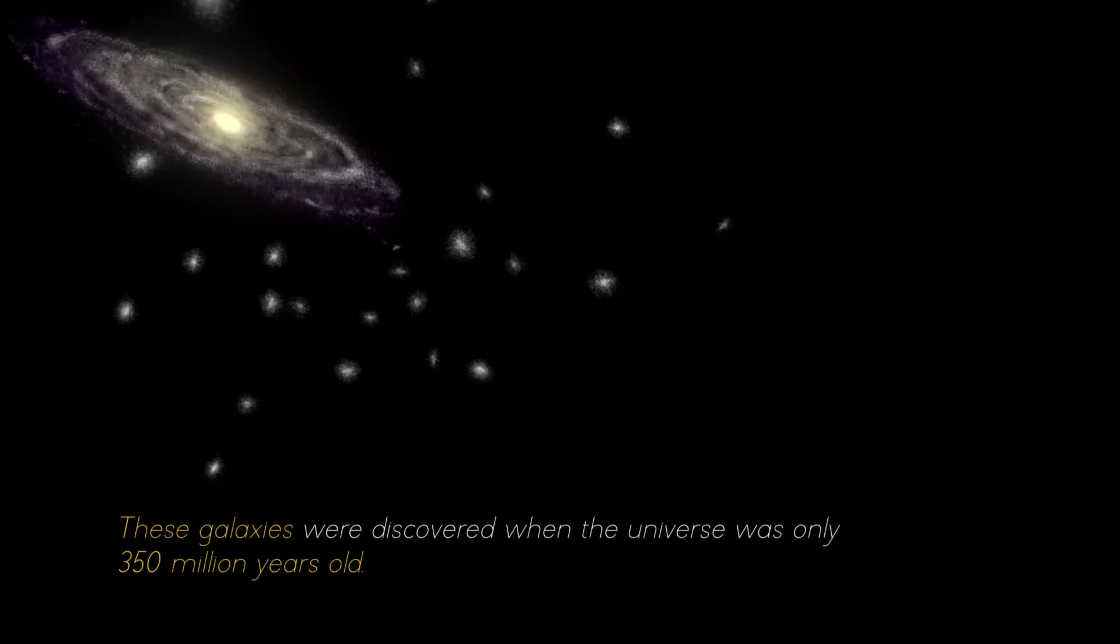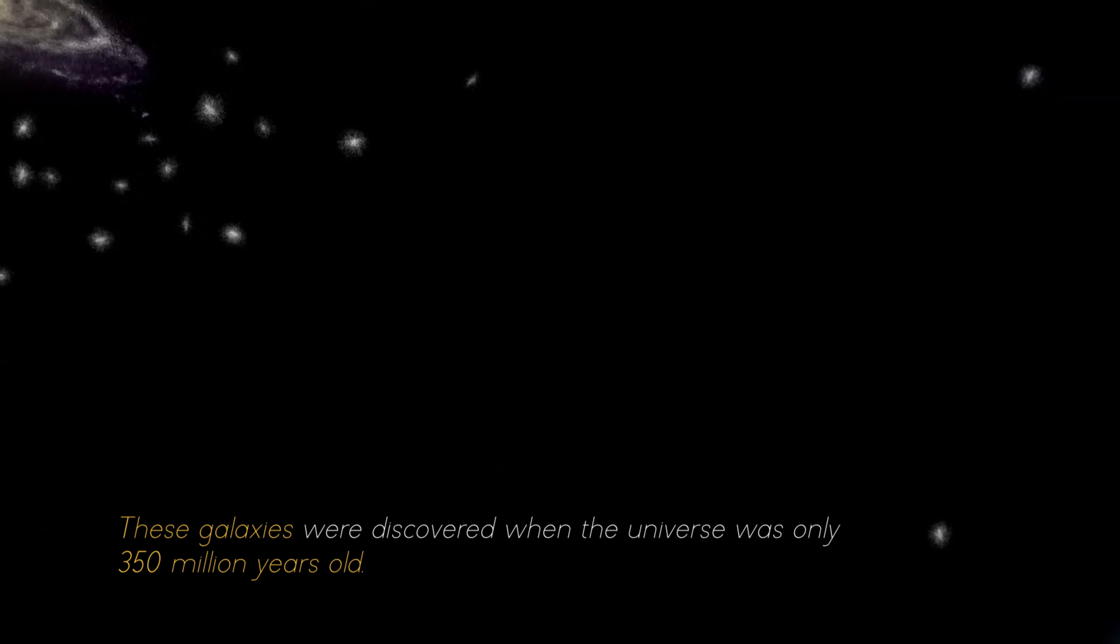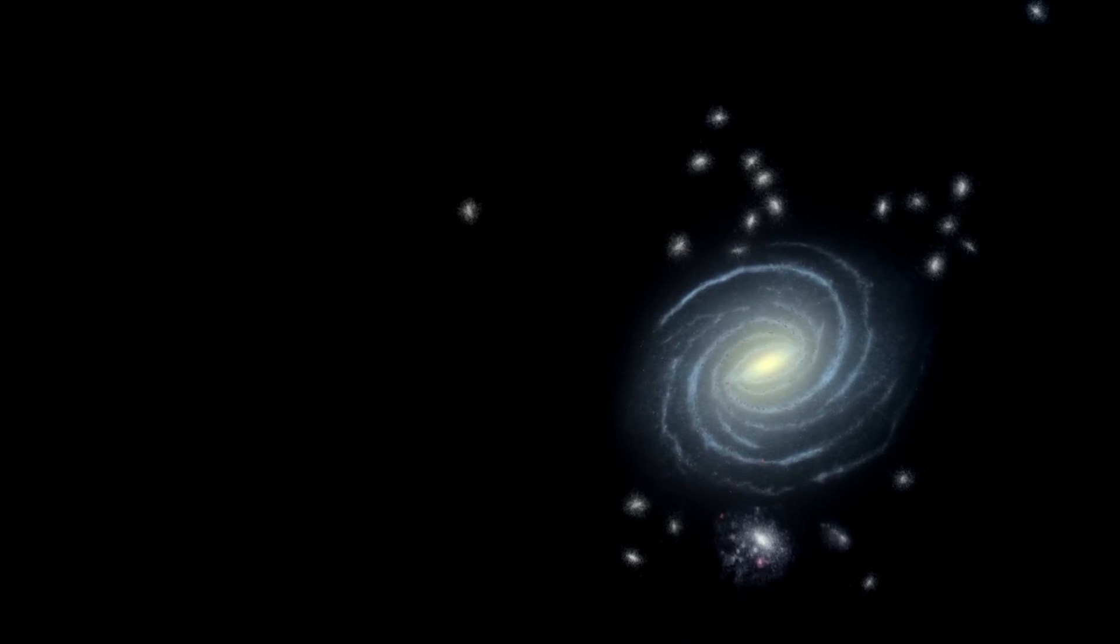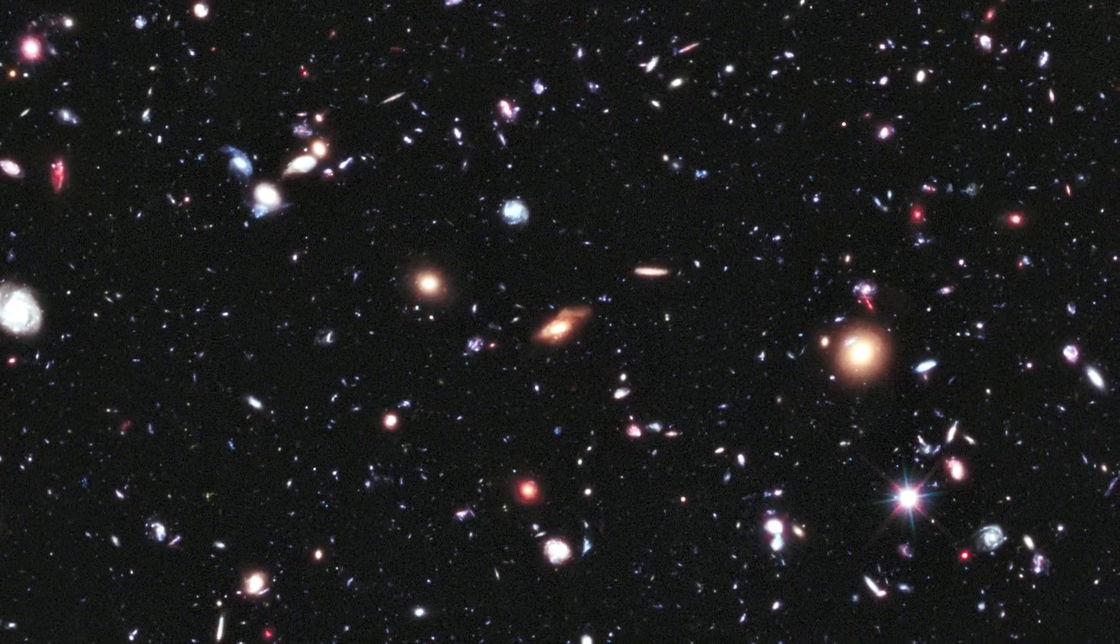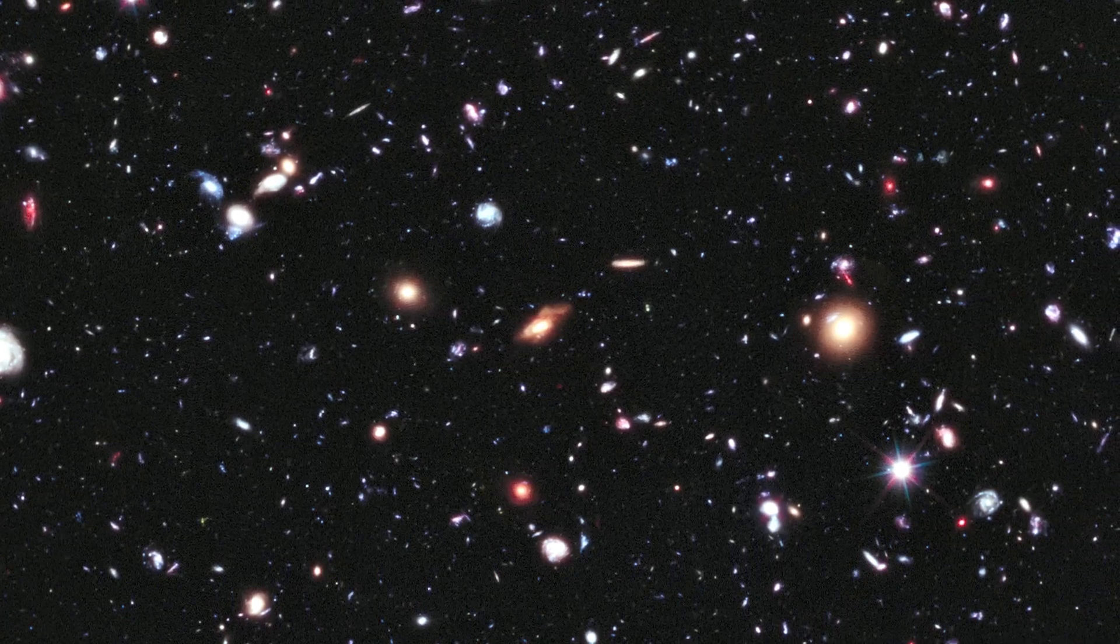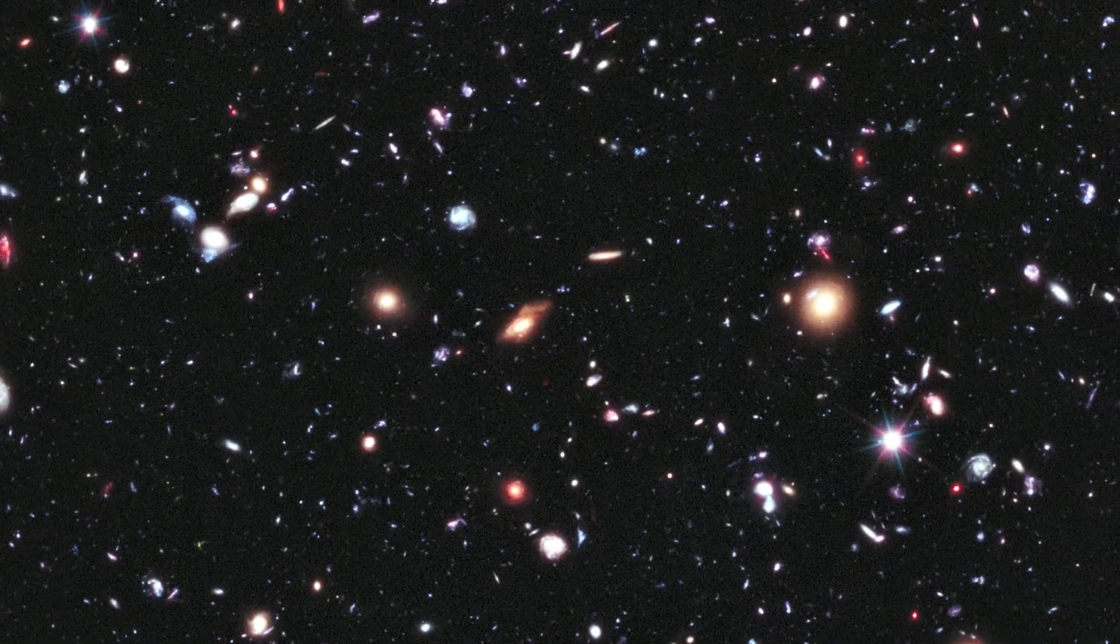These galaxies were discovered when the universe was only 350 million years old, shedding light on how quickly the first generations of galaxies emerged. Spectral data confirmed that these galaxies are at the edge of our view, some even further away than Hubble could see.